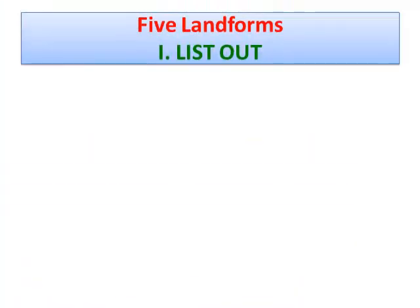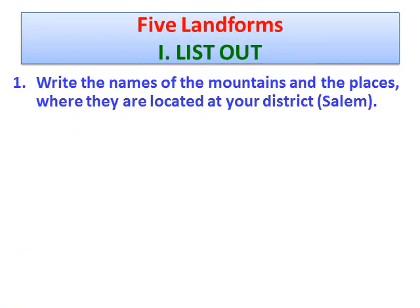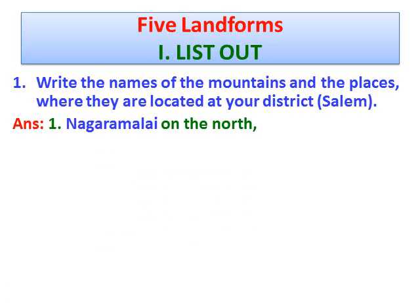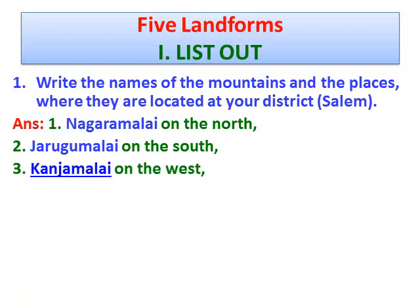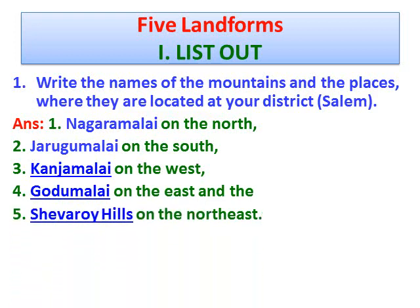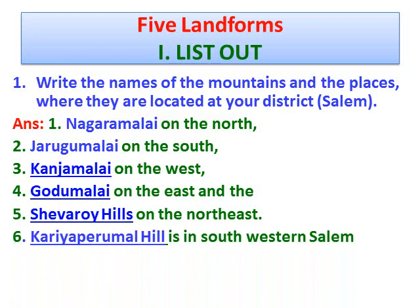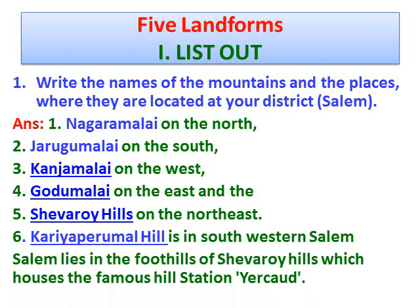Question number one: Write the names of the mountains and the places where they are located in your district, that is Salem. Answer: Nagar Malay on the north, Jarugu Malay on the south, Kanja Malay on the west, Goda Malay on the east, Chevro Hills on the north east, Karia Piramal hill in the south-western Salem. Salem lies in the foothills of Chevro Hills, which houses the famous hill station Yercaud.